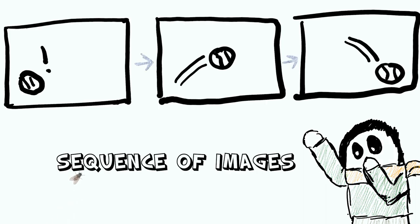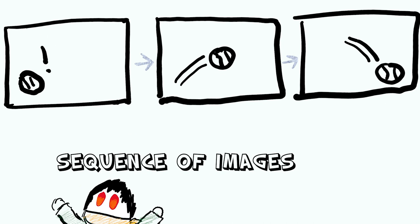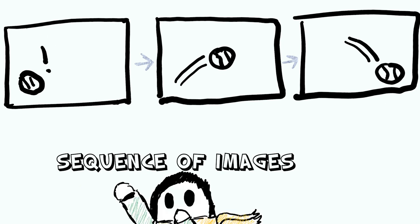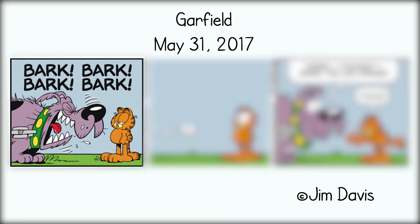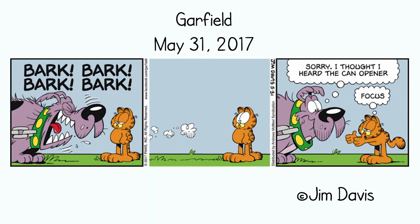See that over there? No, not the fly. I'm talking about the word sequence. This word refers to how panels in comics follow each other. For example, consider this Garfield comic. There's a clear way to read it, from left to right, as that's how the panels are laid out.